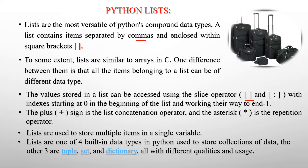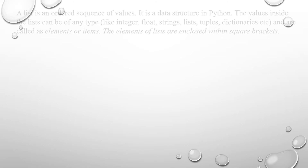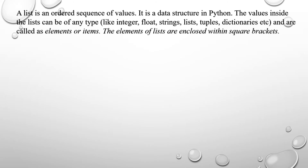The other three built-in data types are tuples, sets, and dictionaries, all with different qualities and usage. A list is an ordered sequence of values and is a data structure in Python.